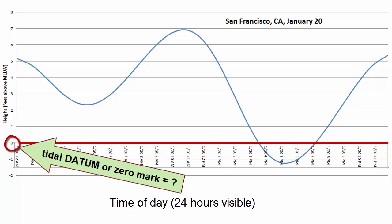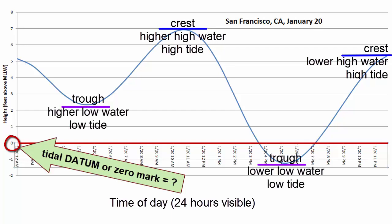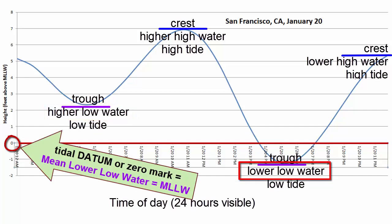As you can see, the tidal waves that occur in one day in San Francisco show two high points — crests, or high water, or high tide — and two low points — troughs, or low water, or low tide. As the troughs are different in their level, we refer to one as higher low water and the other as lower low water. The zero line on the y-axis is mean lower low water, or MLLW, which means the average height of the lower low waters that happened daily over the past year.